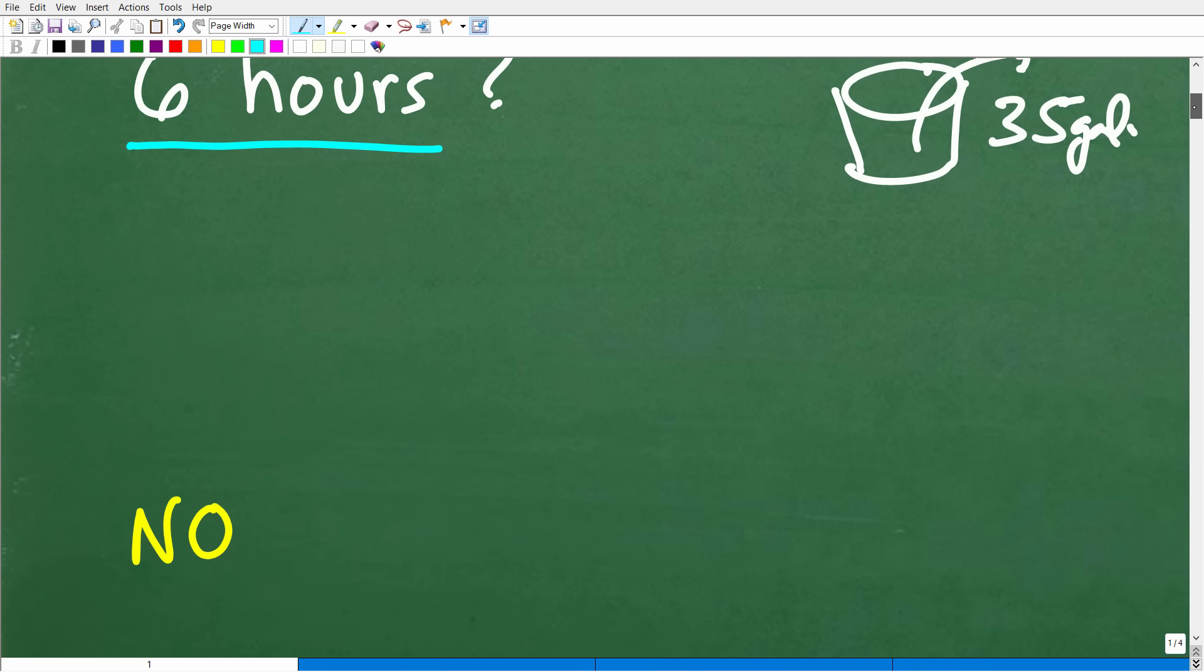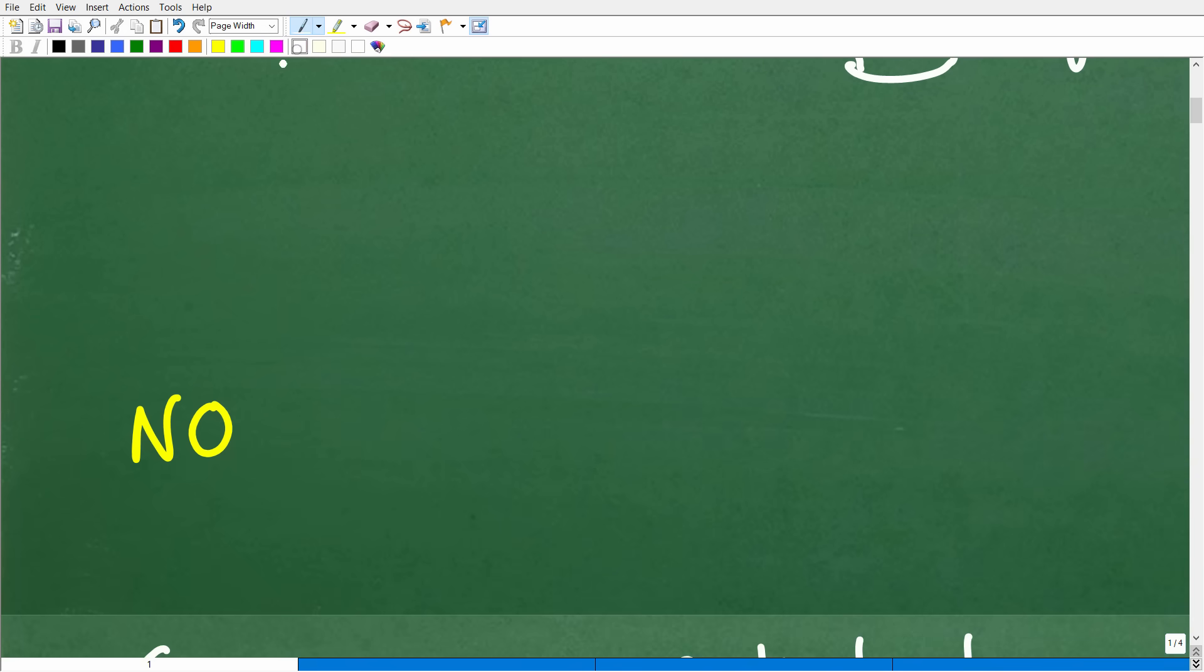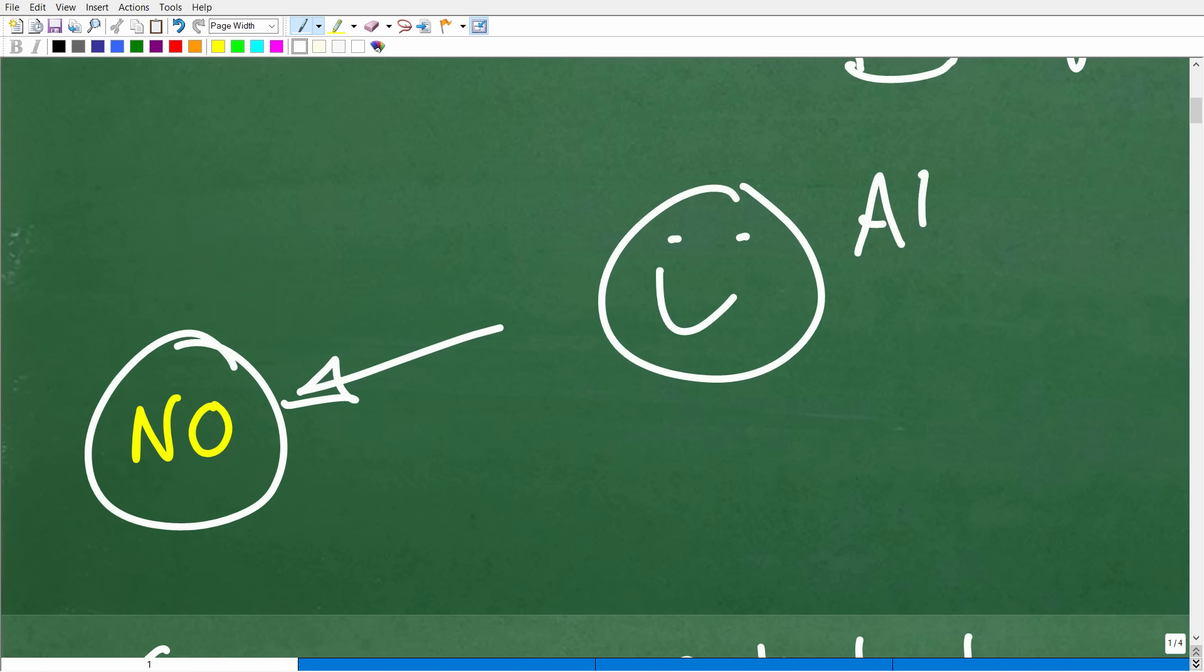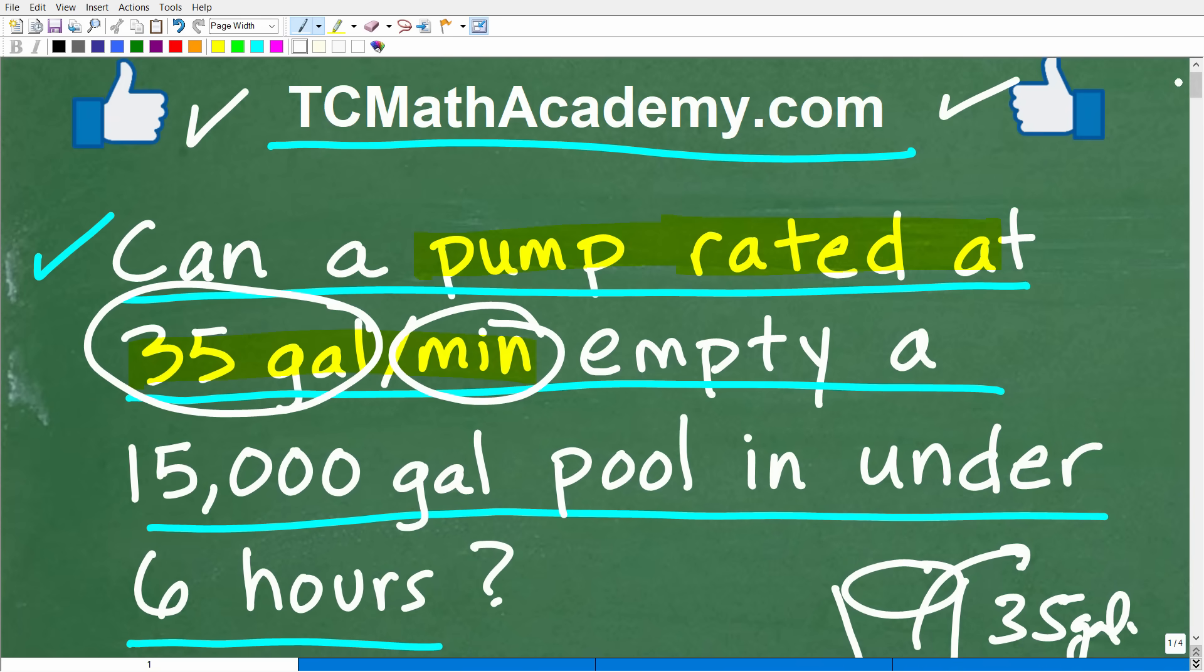If you did this right, okay, you said no, this particular pump cannot do this. And of course, you have the math to back up that answer. But if you have the math to back up this answer and you said no, well, we have to celebrate by giving you a nice little happy face and a plus a 100 percent and multiple stars.